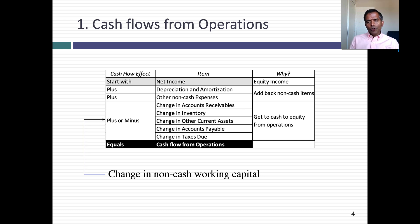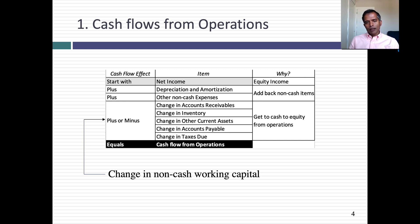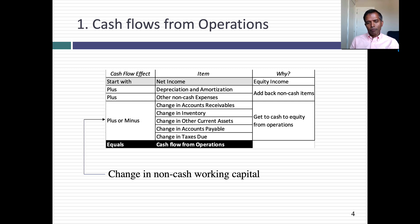Then you subtract out a whole series of items, including change in accounts receivable, change in inventory, and others. Consolidated, those line items represent the change in non-cash working capital. Let me repeat that — they represent the change in non-cash working capital.